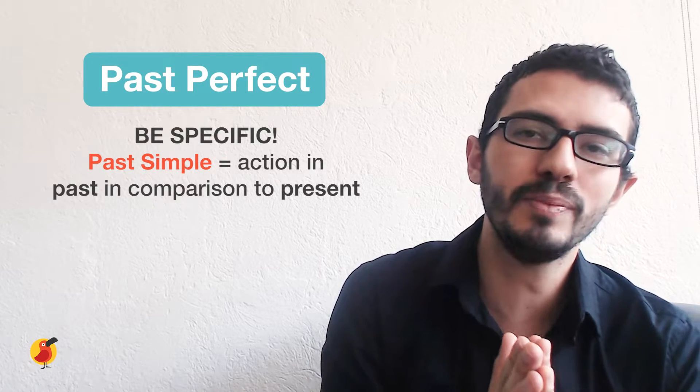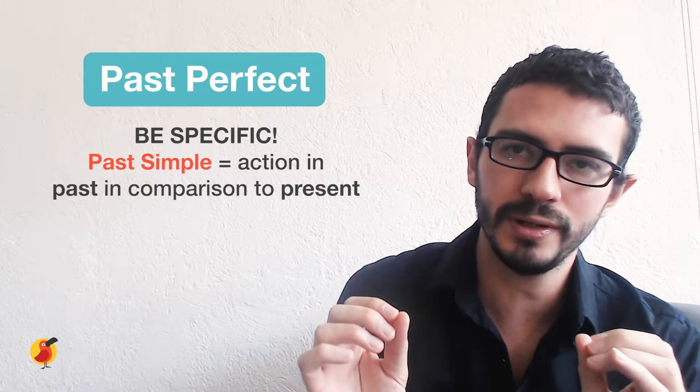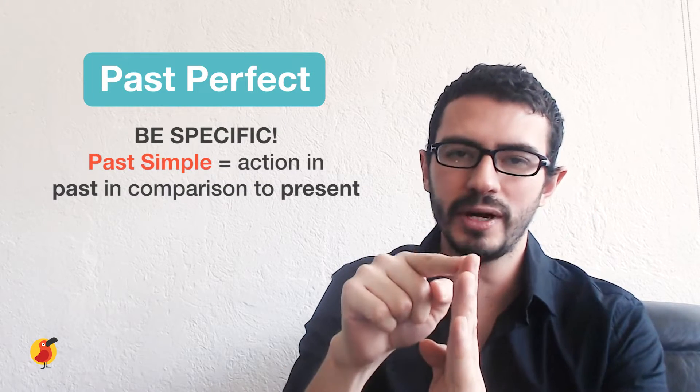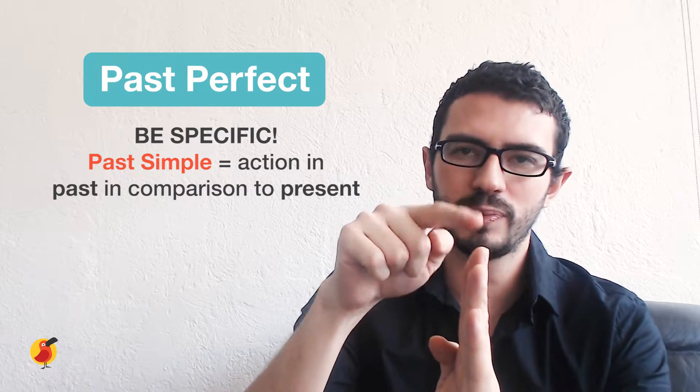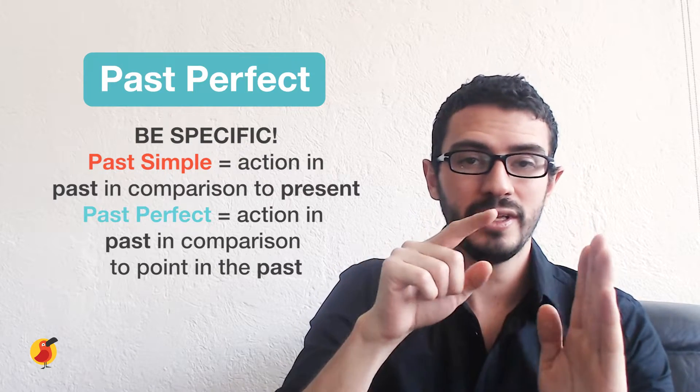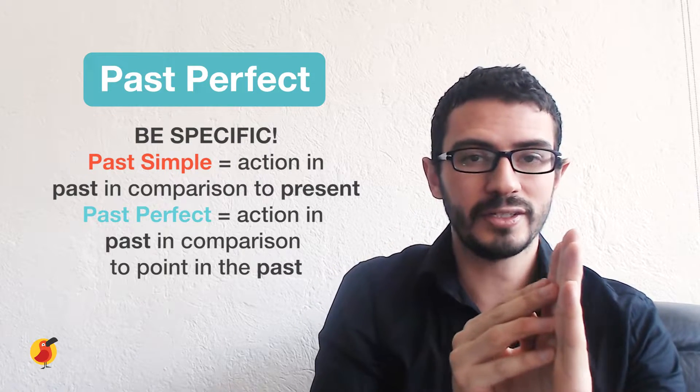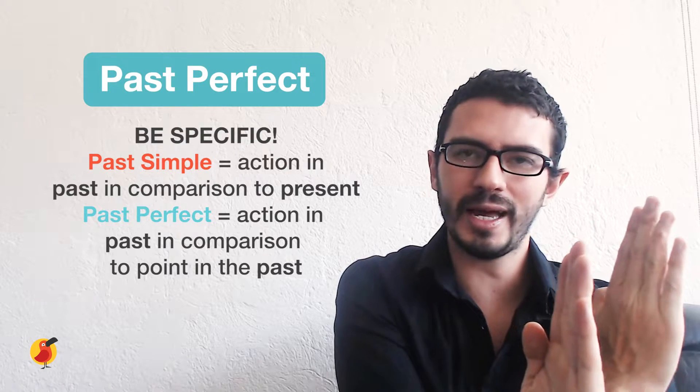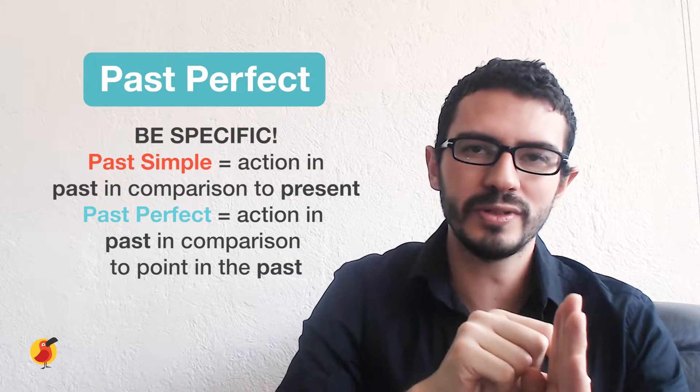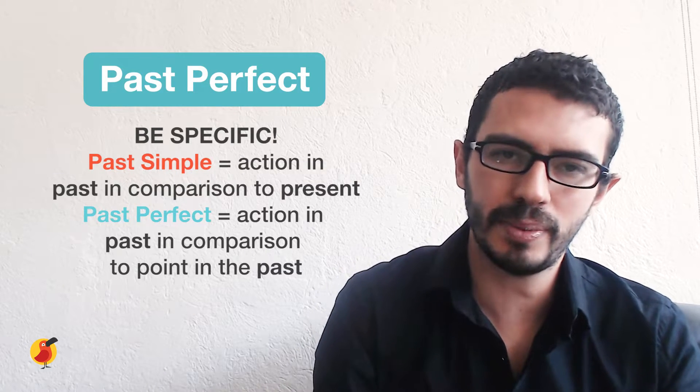When you're using the simple past, you're talking about something that happened in the past in comparison to the present. So the reference point relies in the present. But when you're talking about the past perfect, the reference point is going to be in the past. So something that happens in the past, and then it is affecting all the way to some specific point in the past.